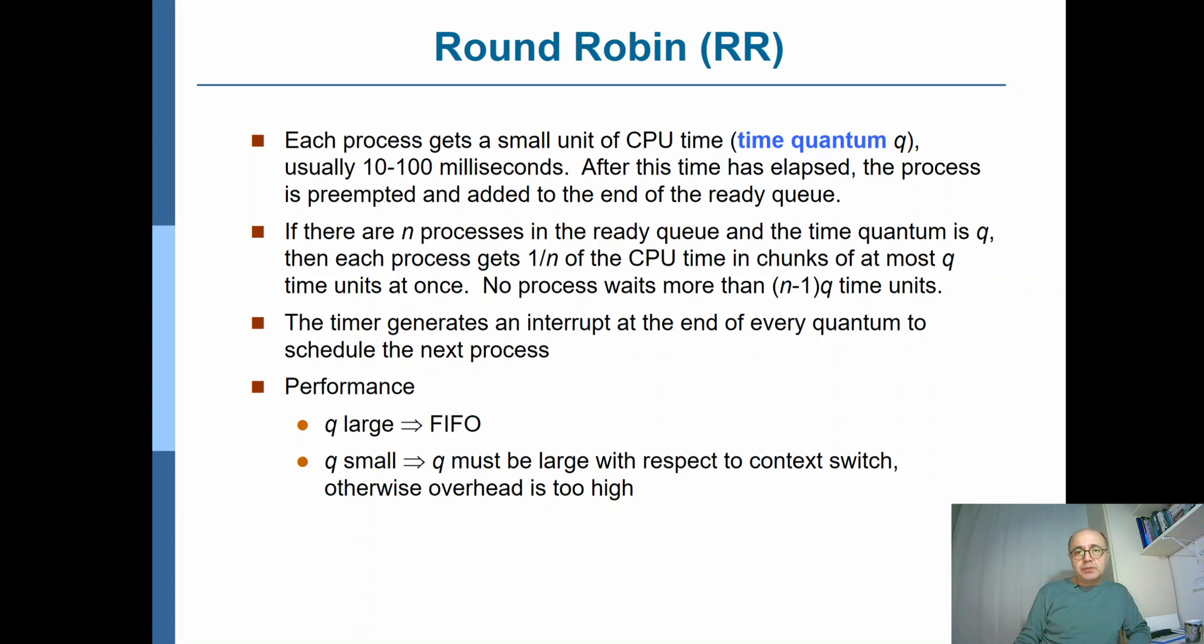In most modern operating systems, the length of this time quantum is something between 10 to 100 milliseconds. So that means in a short time you will get a chance to go into the CPU. If, for example, we have n processes in the system and a time quantum of length q, then since there are n processes and they all have the same time quantum length, everyone gets 1/n share of the CPU time.